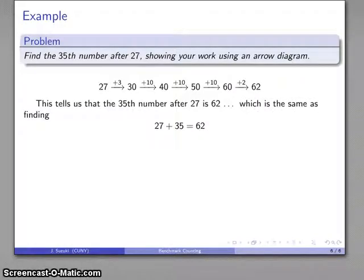And this is the same as finding the sum, twenty-seven plus thirty-five equals sixty-two. And we can turn this into a formal method of addition, which is based ultimately on counting.